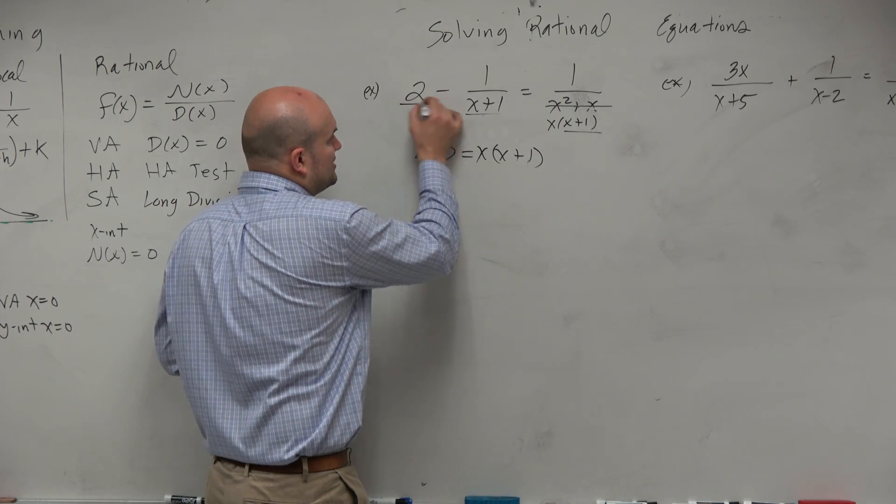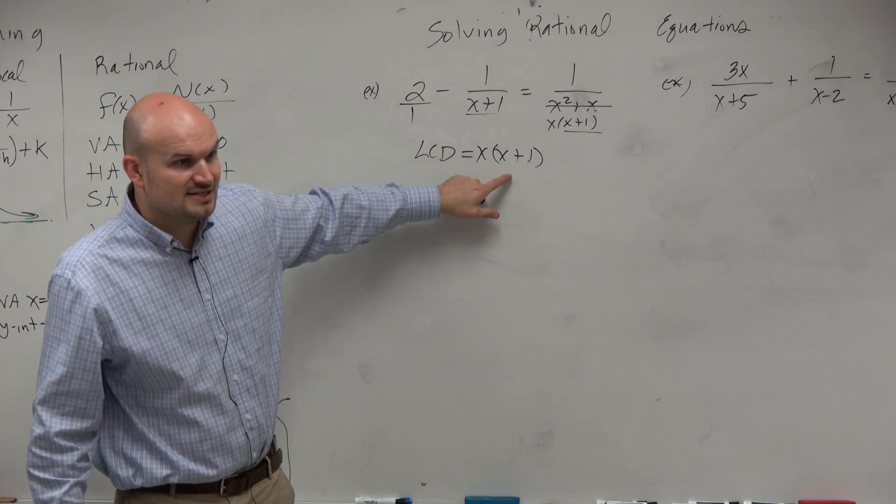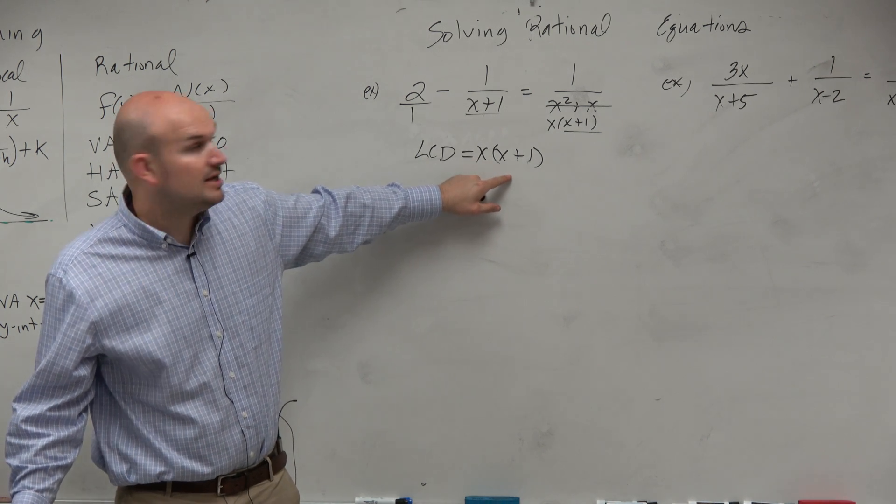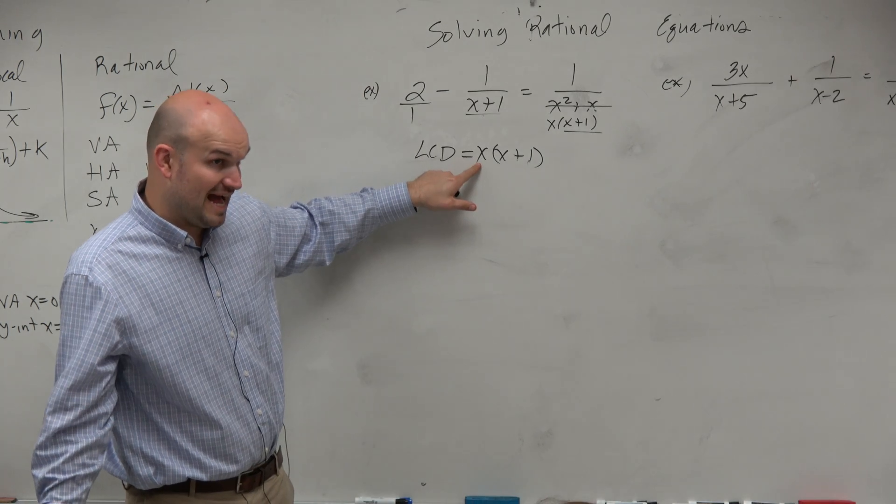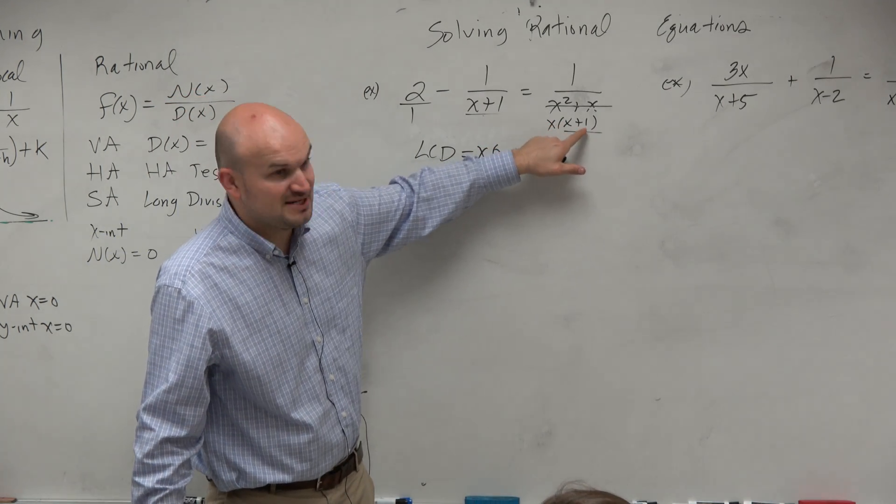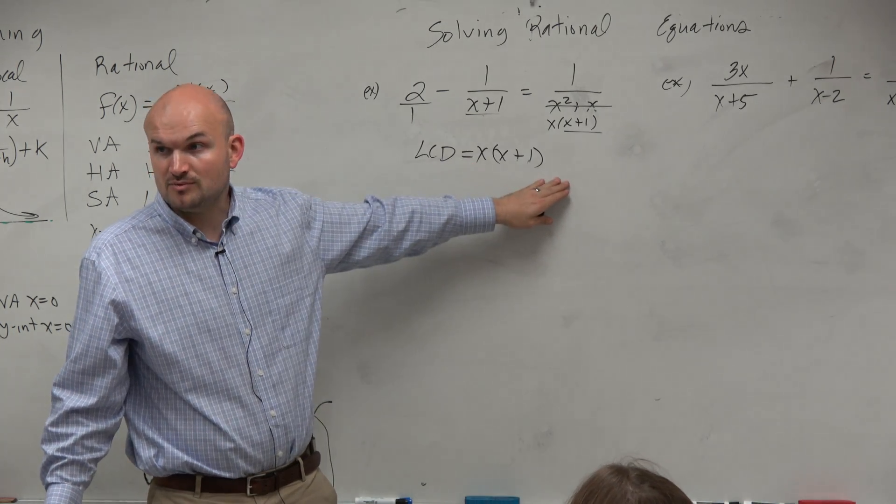So our first step is to identify the least common denominator is going to be x plus 1, because these two both share an x plus 1. However, this has an extra x, so obviously we need to have an extra x for that to divide into. So that's going to be our least common denominator is x times x plus 1. And again, let's look at this. Here's 1, right? So let's just double check. Does 1 divide into that? Sure, 1 divides into everything. Does x plus 1 divide into that? Yes, it divides into that x times. Does x times x plus 1 divide into that? Yes, it's the exact same expression. So that is our least common multiple.